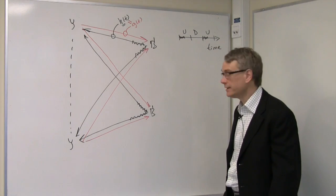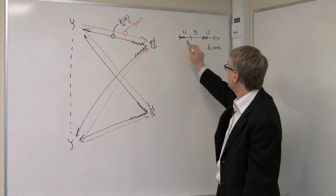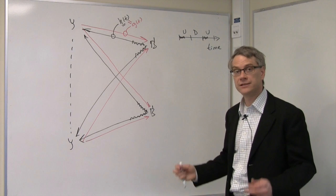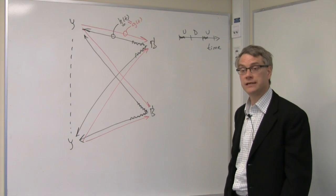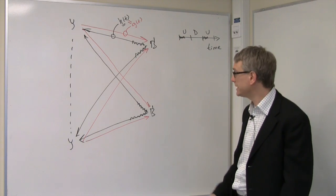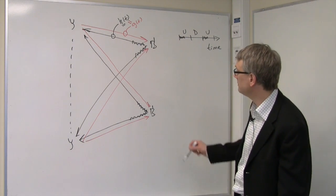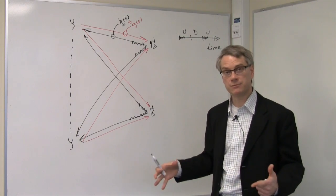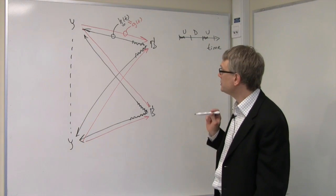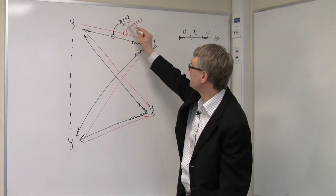Now, in the uplink still, during the remaining part of the uplink, the terminals transmit payload data. And in order for the base station to be able to decode this payload data, in particular, in order for the base station to be able to separate these terminals, because remember they all transmit simultaneously, the base station uses knowledge of these impulse responses H of t.